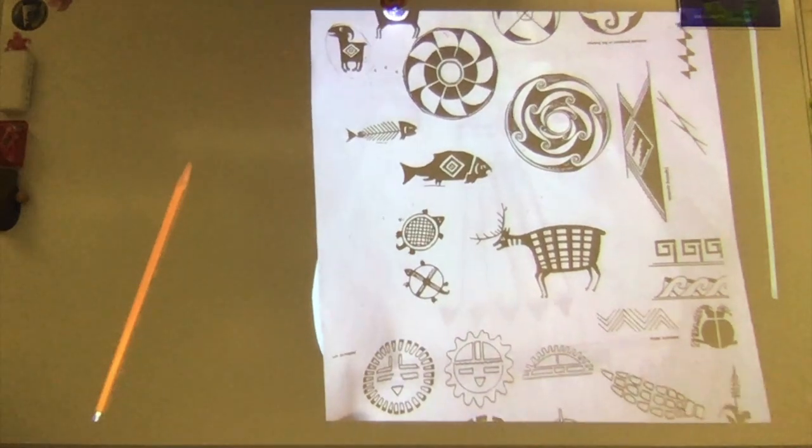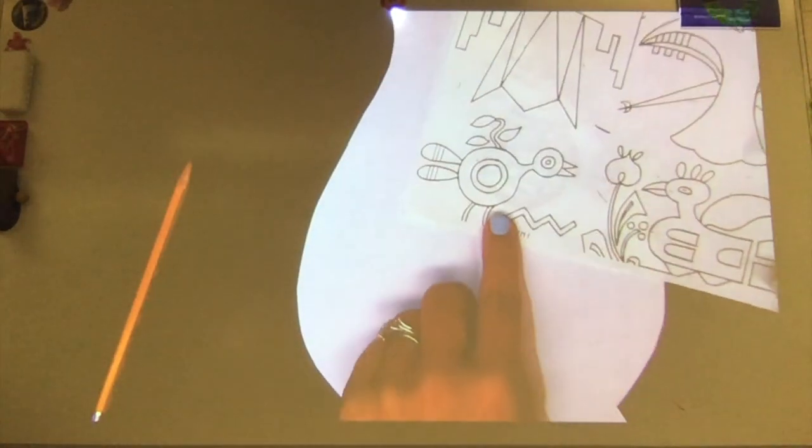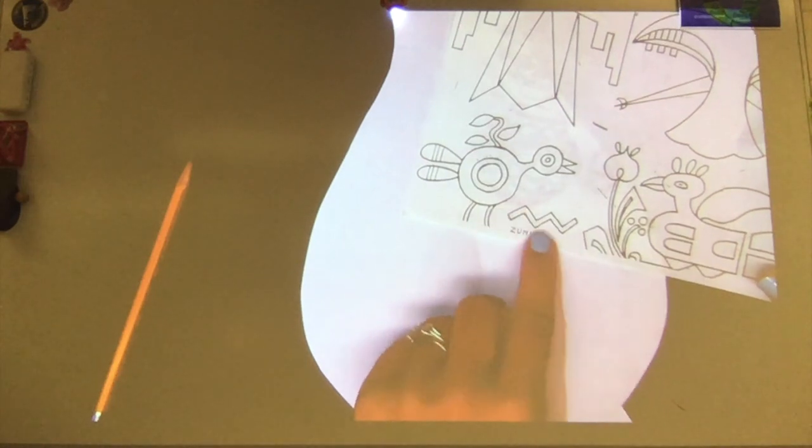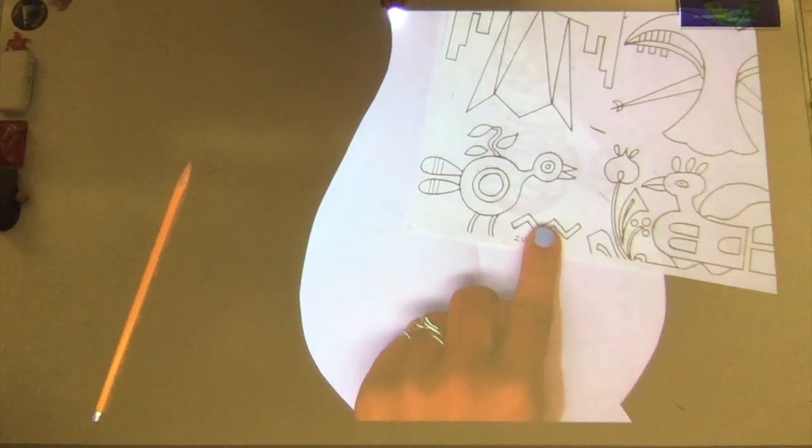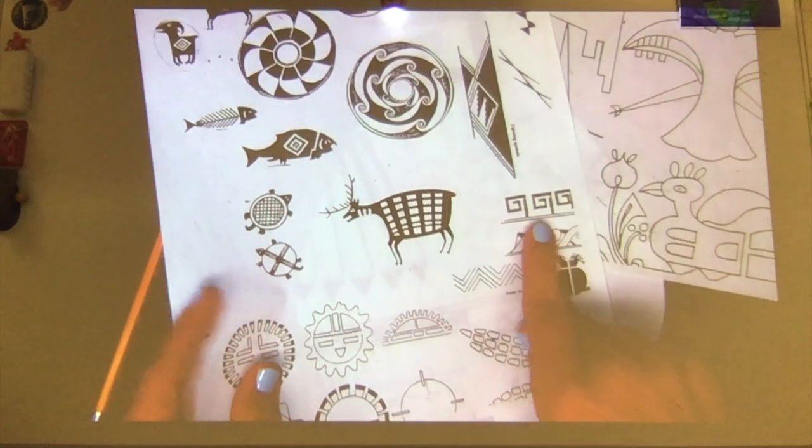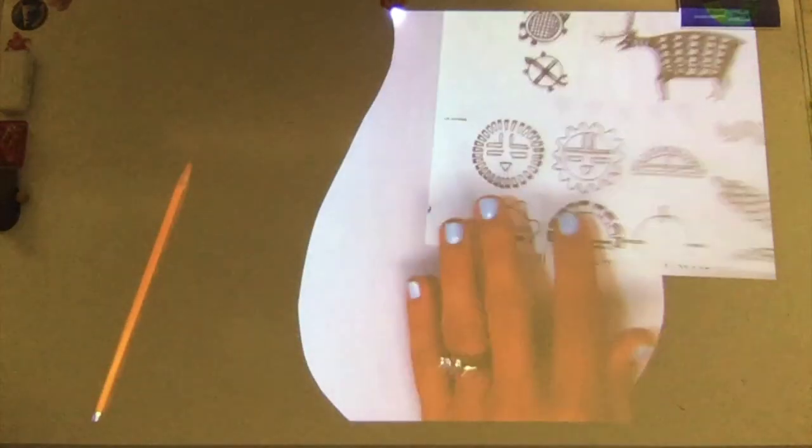So what you're going to do is pick at least three designs that you like. So I am going to pick, let's see here, I'm going to go with this bird. I'm actually going to also go with this pattern here. And then I am probably going to do this pattern as well in my design.